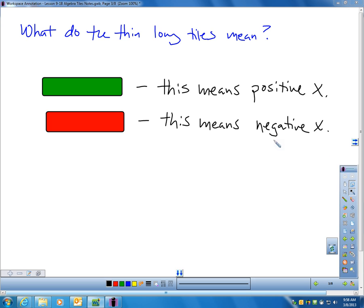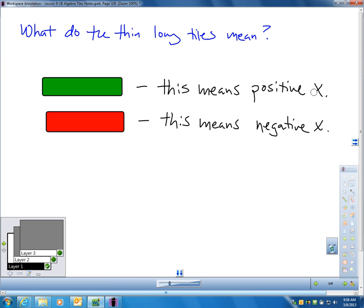On your sheet, you're going to have some longer tiles. They have the same width as the unit tile, but they're longer. These long tiles represent variables. This longer tile means a positive variable, it could be any variable. It's a positive variable. It could be y, it could be z, it could be x. The opposite side would be red. This would mean it's the opposite or the negative of that.